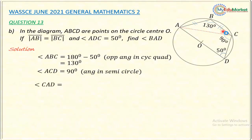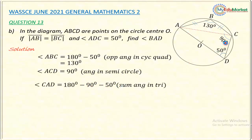Now let me find angle CAD. In triangle ACD, the sum of angles is 180. So angle CAD = 180 minus 90 minus 50. Subtracting 90 and 50 from 180 gives us 40 degrees. So angle CAD = 40 degrees.